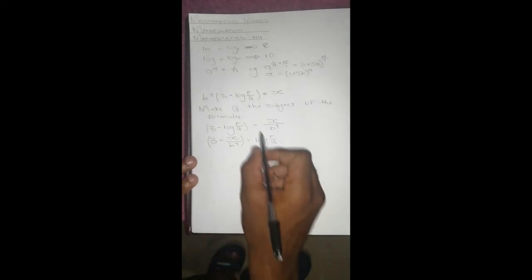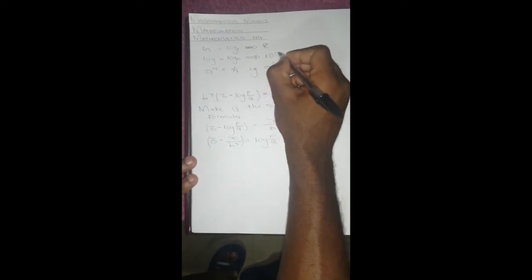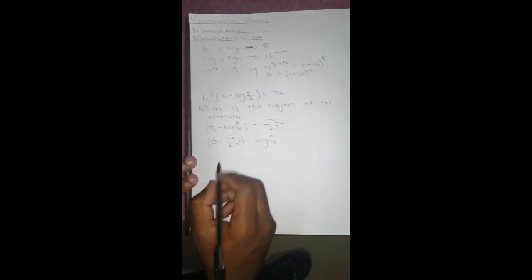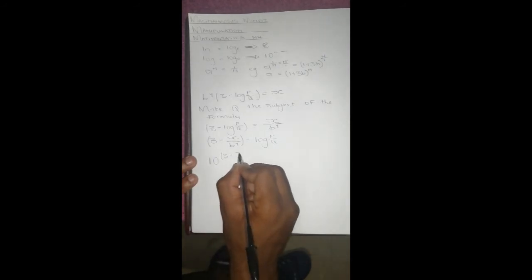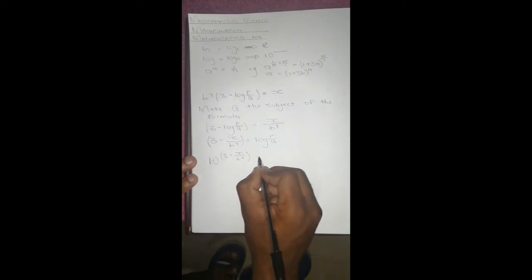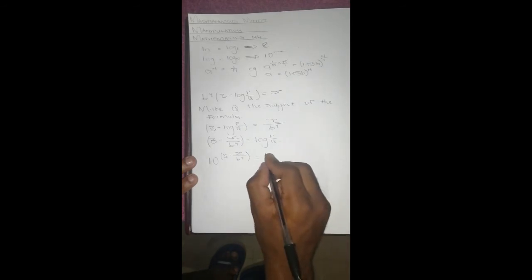And to do that, since I've said here that log we cancel it by taking 10 to the power something, so it's going to be 10 to the power 3 minus x over b to the power y equals to 10 to the power log, which is going to give us p over q.